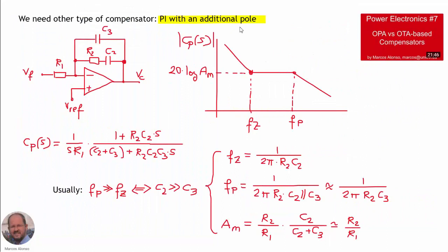Let's try a more sophisticated compensator: the PI compensator with an additional pole. We only need to add capacitor C3 to the simple PI compensator. This new compensator has a pole at the origin, a zero at a given frequency, and then a pole at a higher frequency. We can also control the gain of the flat part of the response. The transfer function of this compensator is as shown.